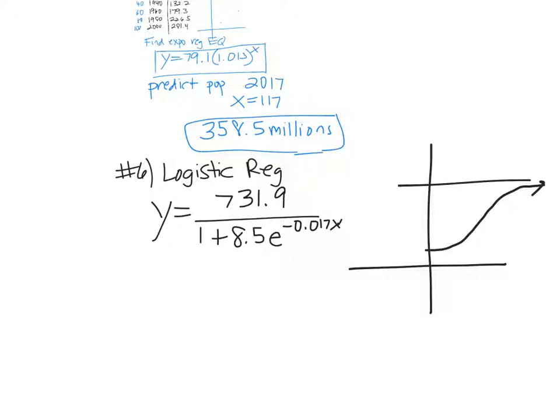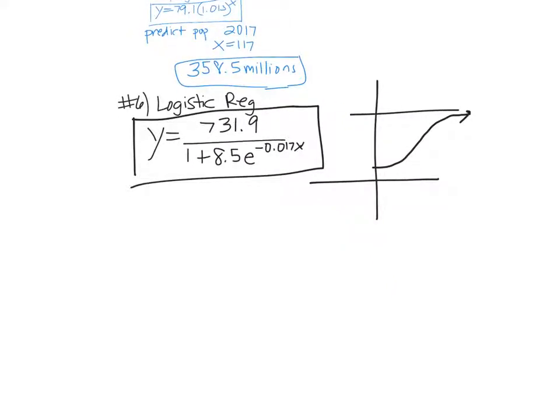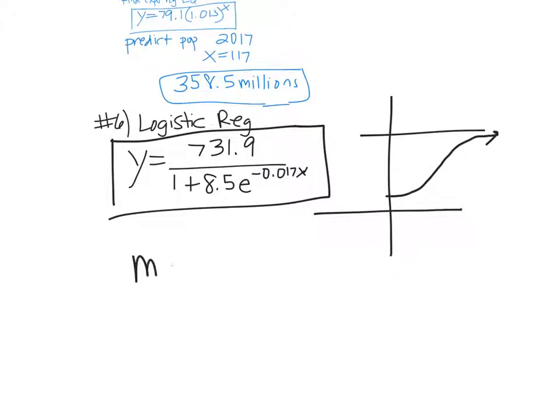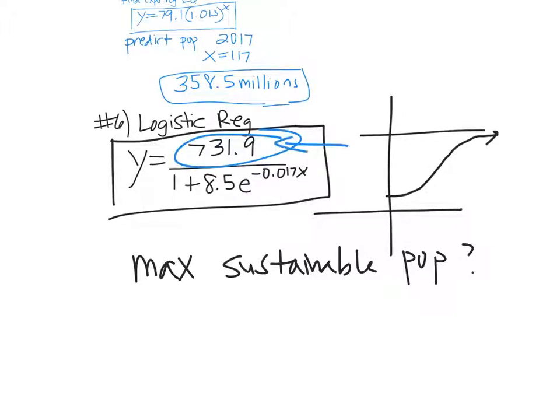So logistic, what that does is it goes through the data points, but then it has an asymptote right here at 732 million people. That's still a lot. That's still way too many. So some people would say logistics better. Some people would say the exponential's really good. They're both really good for that. Now, they're going to ask you what is the max sustainable population for the United States. That number comes from right there. Right here. The constant up top. So you would say 731.9 million people. That's the maximum sustainable population.